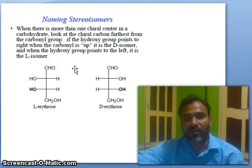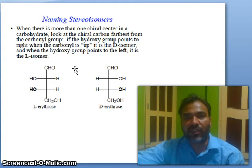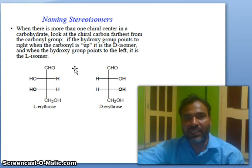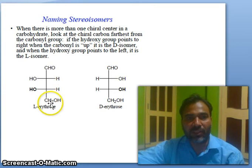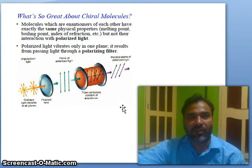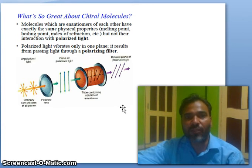If the hydroxyl group points to the right when the carbonyl is up, it is the D isomer. When the hydroxyl group points to the left, it is the L isomer. Molecules which are enantiomers of each other have exactly the same physical properties — melting point, boiling point, index of refraction — but differ in their interactions with plane-polarized light.